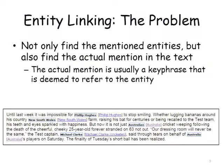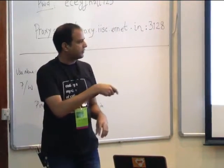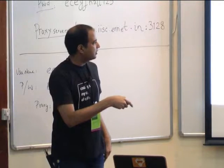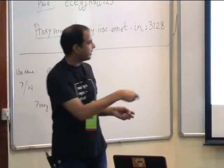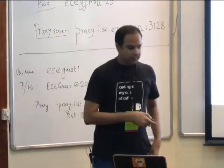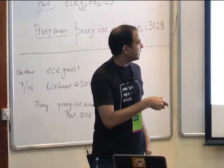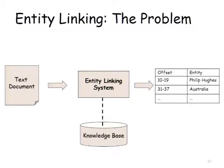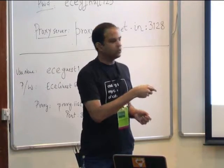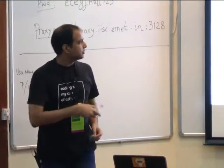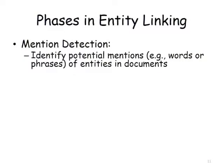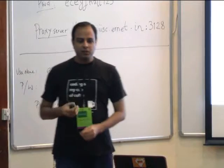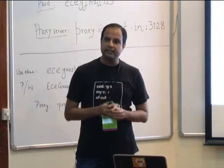This problem can be divided into two main steps. First, finding all phrases eligible to be linked to some entity, and then linking them. The entity linking system takes inputs from the knowledge base and outputs, for example, at offset 10 to 19, a phrase linked to Philip Hughes or Australia. There are three phases: mention detection — identify potential mentions, words or phrases referring to entities; candidate entity generation — given a phrase, identify candidate entities it could link to; and entity linking or ranking — select the best fitting entity in context.